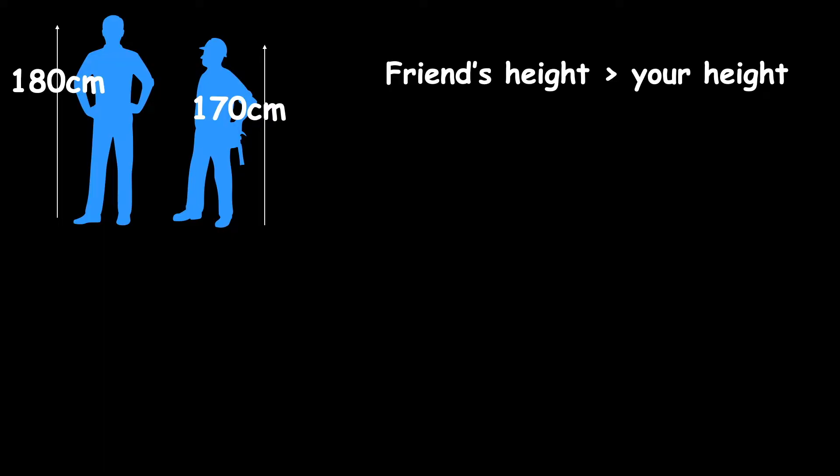Let's start off with a real world example. Let's say you have a friend that's taller than you and let's say he is 180 centimeters, he or she, and let's say you are 170 centimeters. You could represent this as an inequality. You could say your friend's height is greater than your height or 180 is greater than 170.